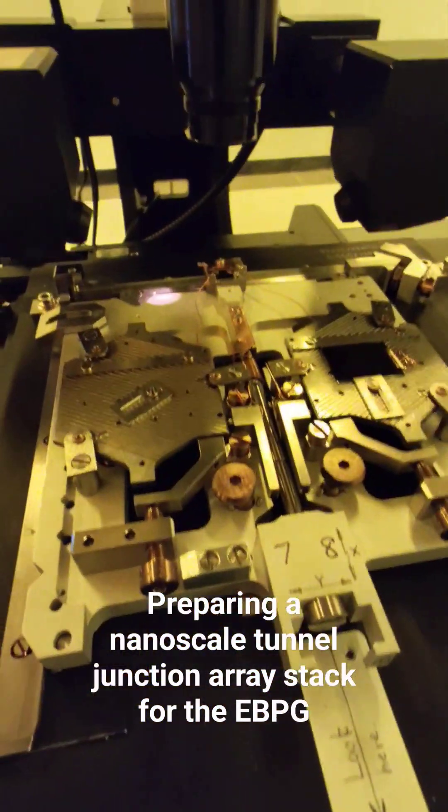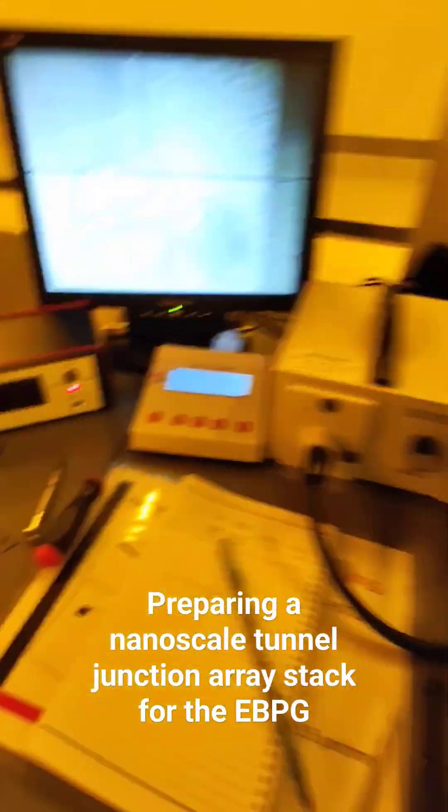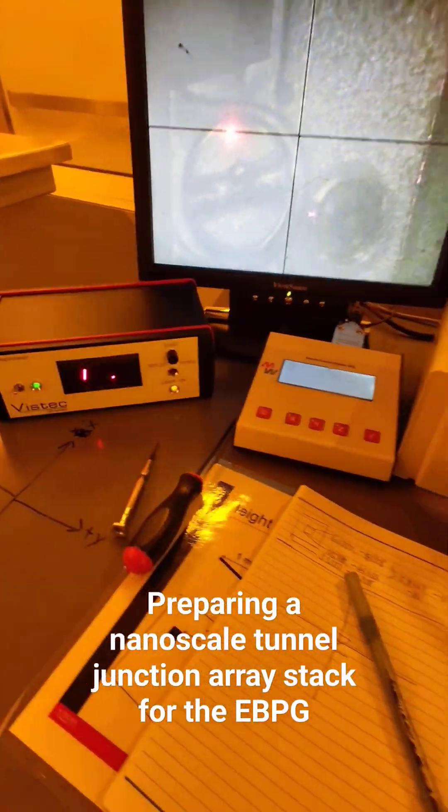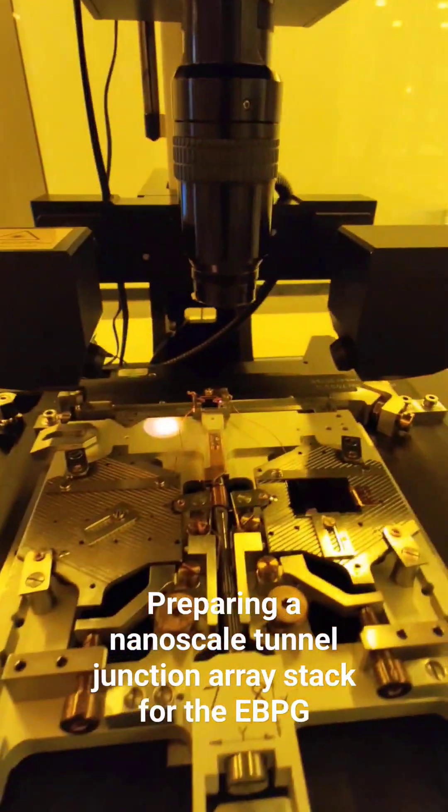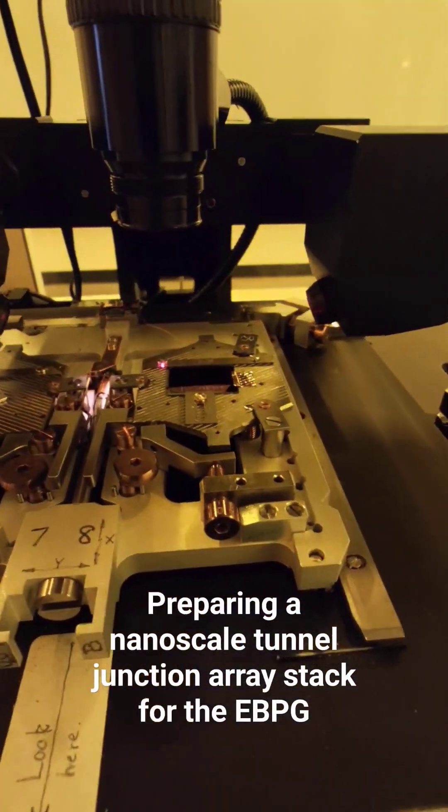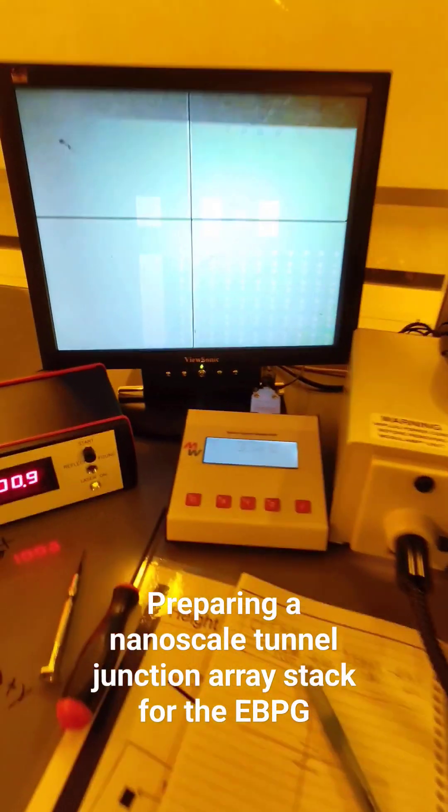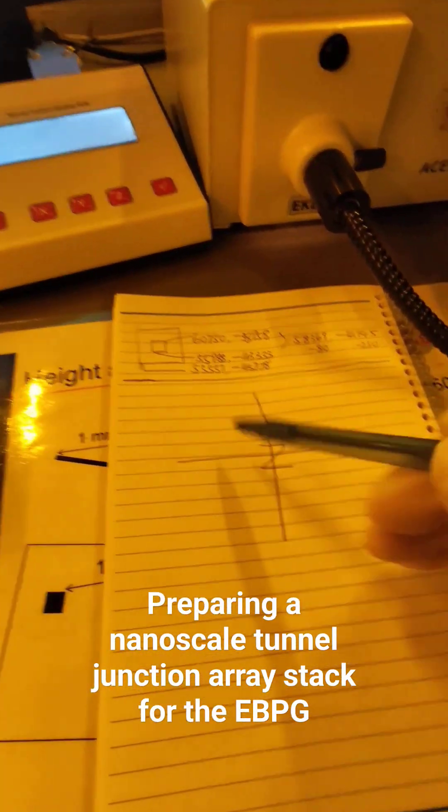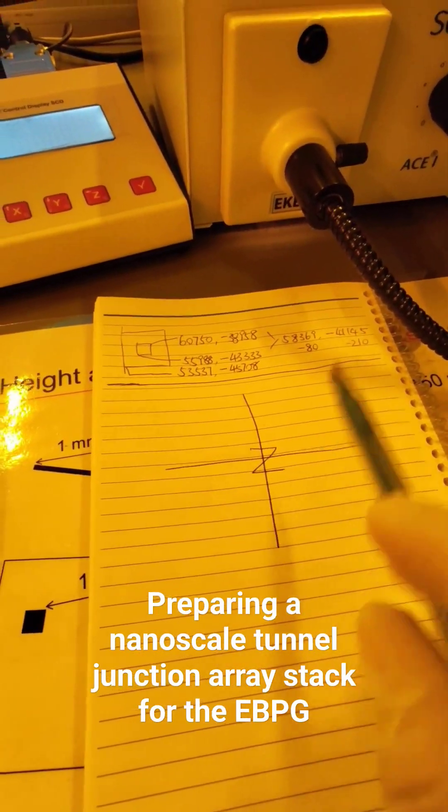And right now I'm going to use a laser. So I press a button here and it's going to shine onto a certain part of the chip, a reference point first, and then I will mark a specific part of the chip using this and record it in a notebook.